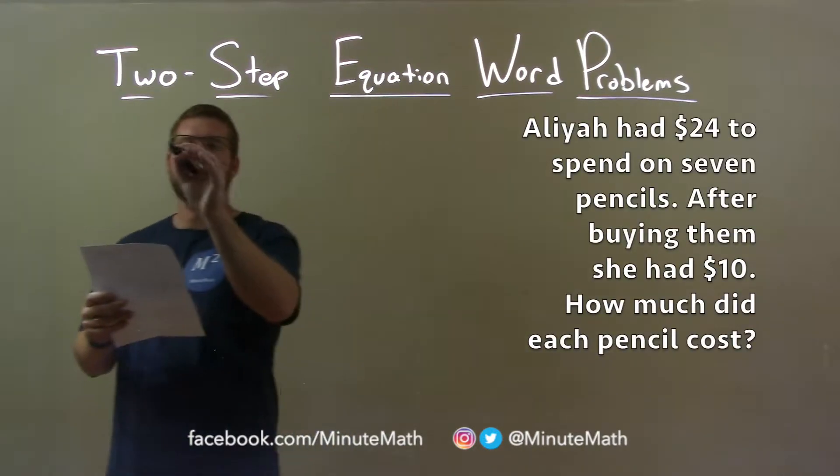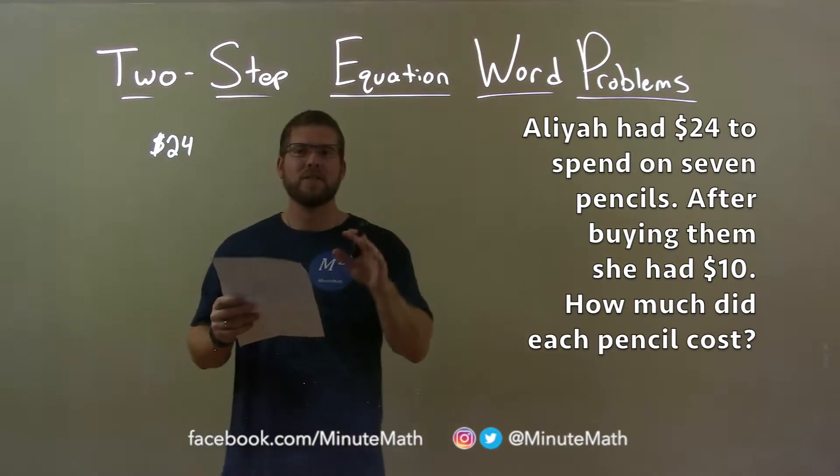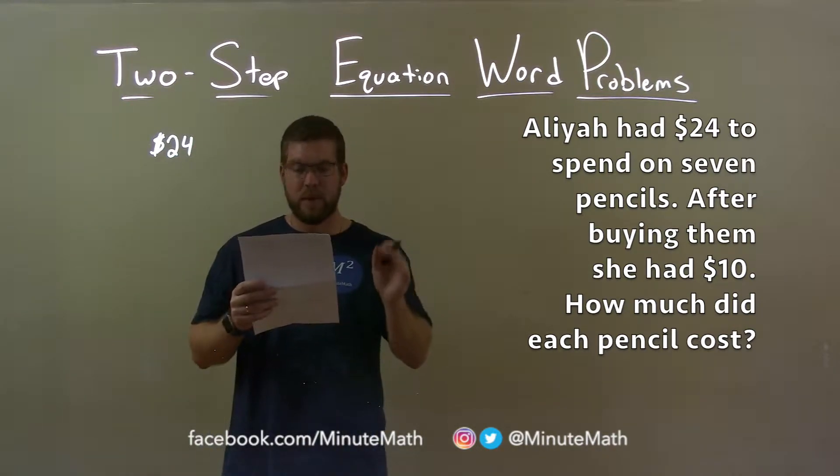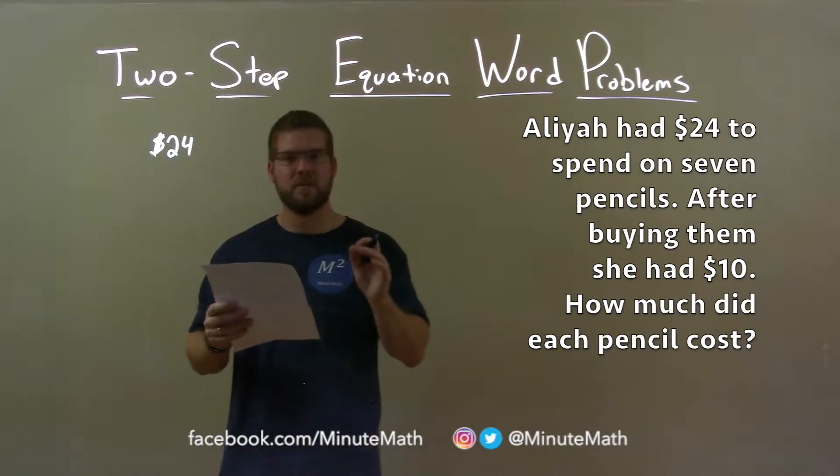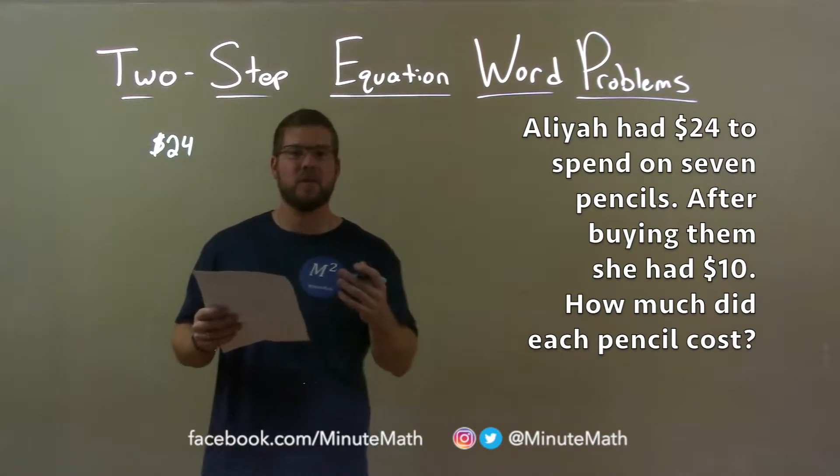So, she had a total of $24. Now, they said she had $24 to spend on 7 pencils. After she spent on the 7 pencils, the cost of 7 pencils, she had $10 left over.